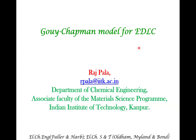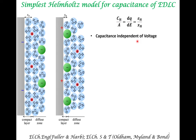Welcome back. In this lecture we will look at the Gouy-Chapman model for electrochemical double layer capacitors. In the previous lecture we had looked at the simplest model, Helmholtz's model for capacitance of an EDL. We had talked about the dielectric permittivity of this layer and x_H. The main thing to understand is that in this model, capacitance is independent of voltage.